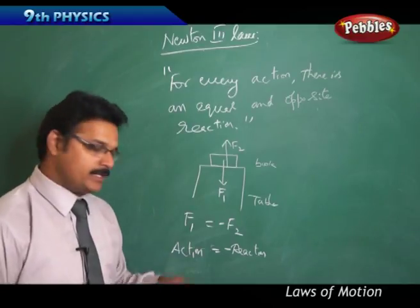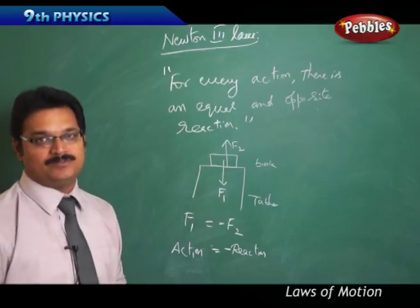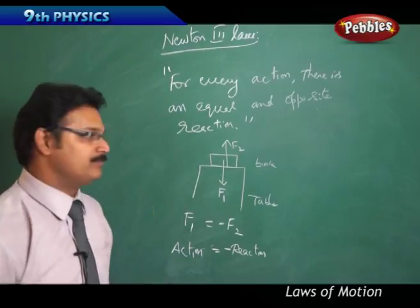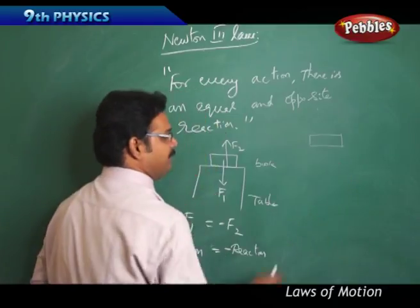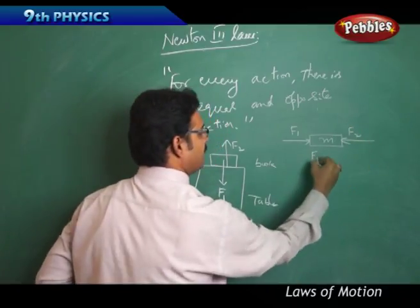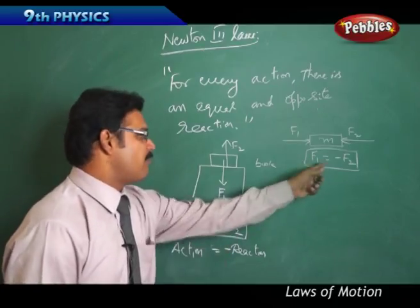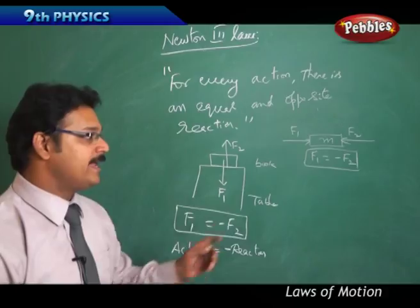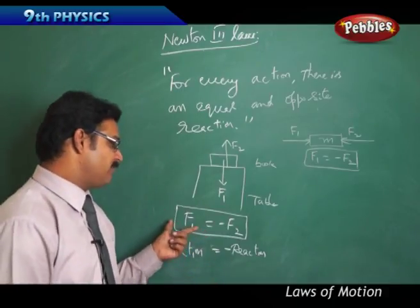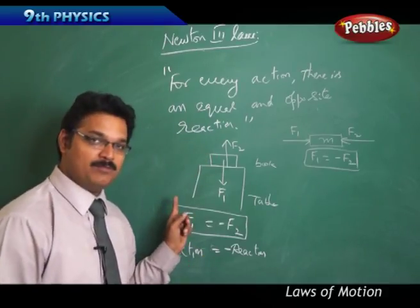One point to remember: action and reaction forces act on a two-body system, not on a single-body system. Newton's third law is applicable for two bodies, not on a single body. In the previous class, we discussed a body of mass M with two forces F1 and F2, where F1 equals minus F2. Here also F1 equals minus F2. Formula-wise both are the same, but conceptually both are different. In the previous case, F1 and F2 are balancing forces acting on a single body. Here F1 and F2 are action-reaction forces acting on two bodies. So don't confuse — Newton's third law is applicable for a two-body system.